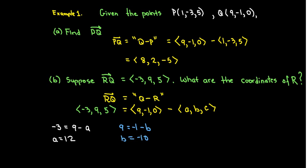Finally, for the third component, I have 5 equals 0 minus C, which means C equals negative 5. And the point R has coordinates 12, negative 10, negative 5.